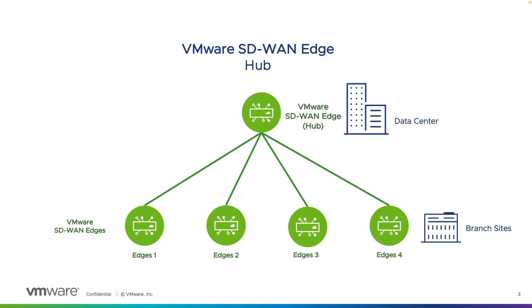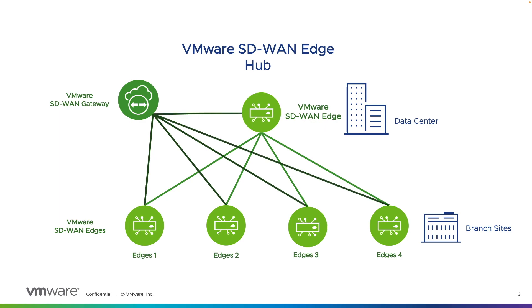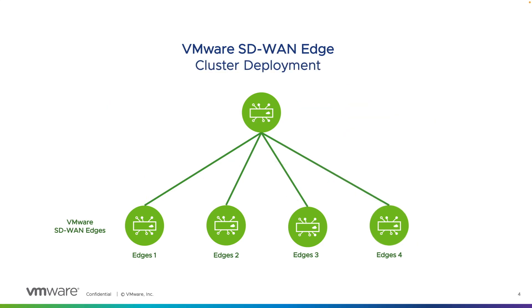Keep in mind that SD-WAN gateways also run as hubs, providing a hubless option allowing edges to be easily deployed even in data center locations without re-architecting the data center network. But if the overlay design requires that a hub be deployed, the number of supported tunnels will be limited by the size of the edge platform used. Reference the datasheet to identify the max tunnel capabilities per edge model.